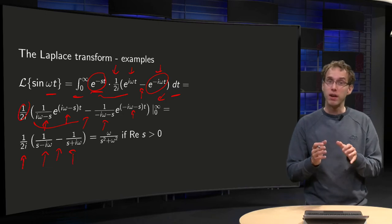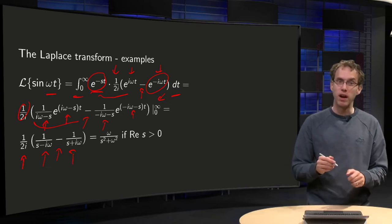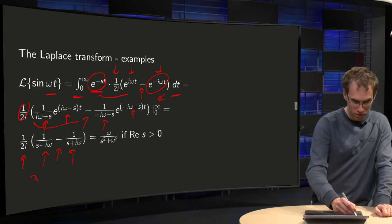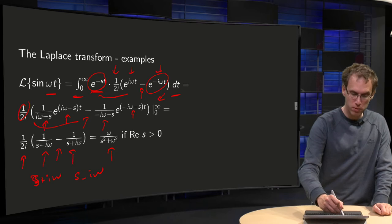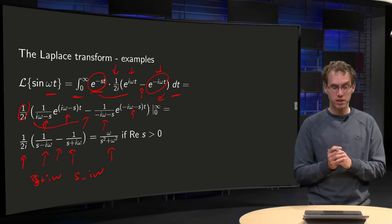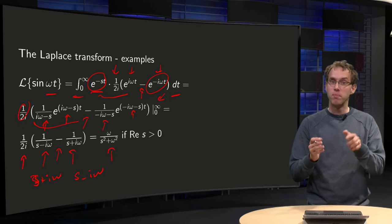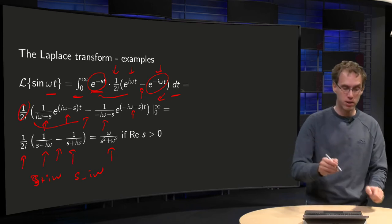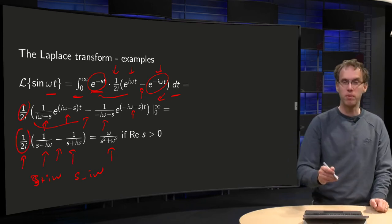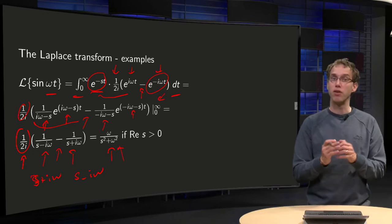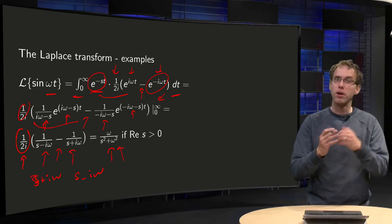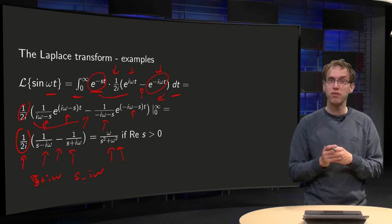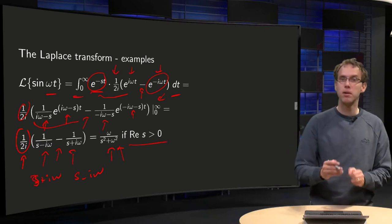You can make from those two fractions one fraction by multiplying the first one by (s + iω) and the other by (s − iω), giving a denominator of s² + ω². In the numerator you get s + iω minus s minus iω, so 2iω divided by 2i equals ω. So the Laplace transform of sin(ωt) is ω over (s² + ω²), and this works if the real part of s is positive.